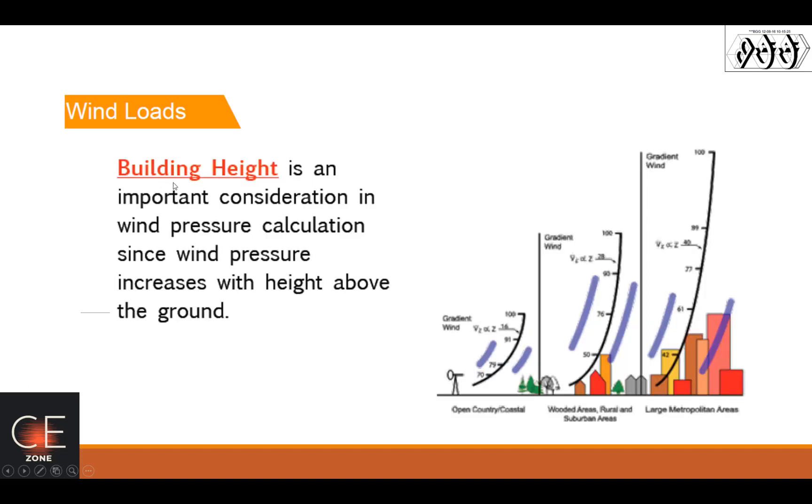And then the building height is an important consideration in wind pressure calculation since wind pressure increases with height above the ground. There is a height wherein the structure is no longer affected by the friction or the exposure, and we call that one the gradient height.